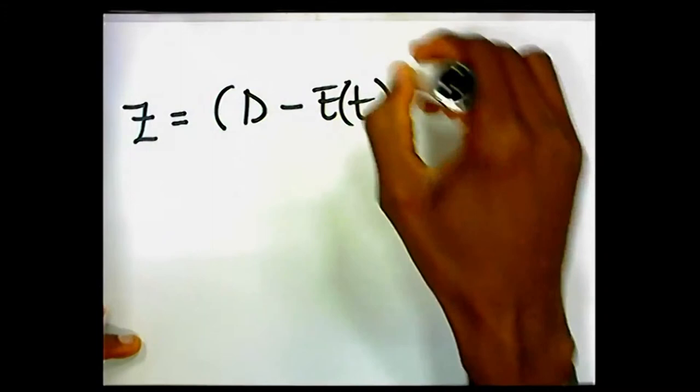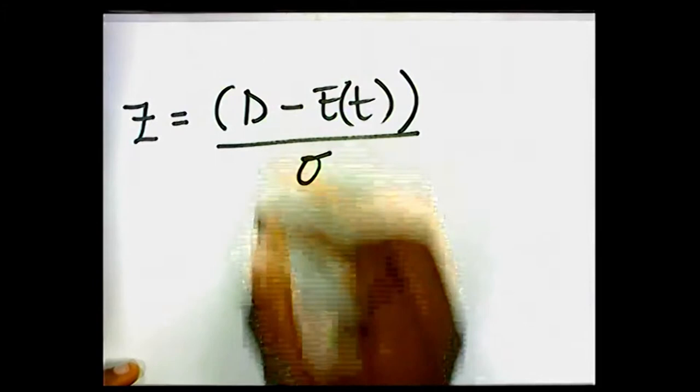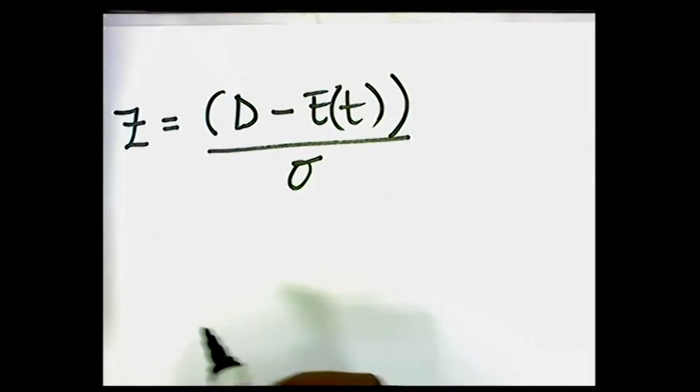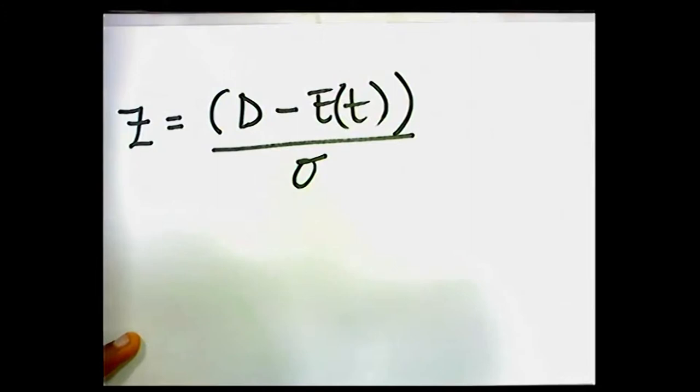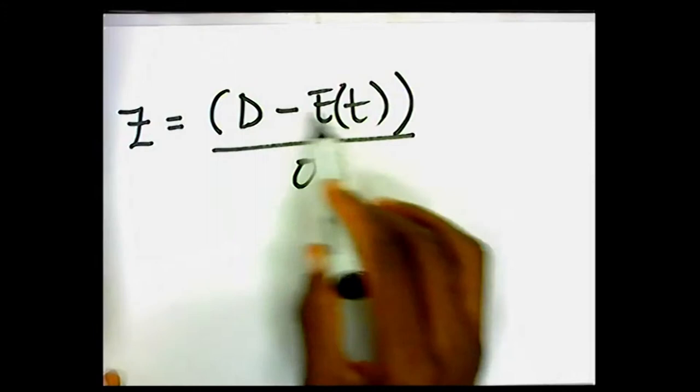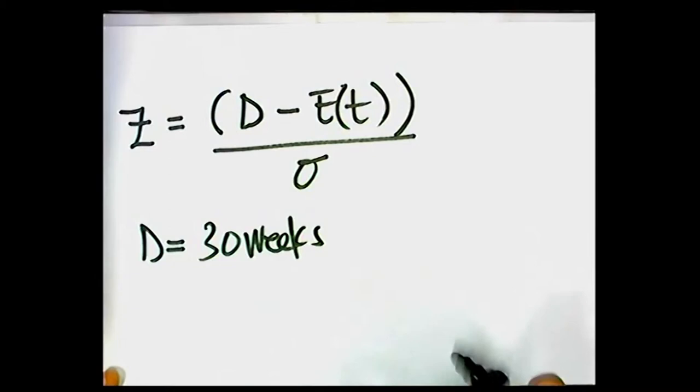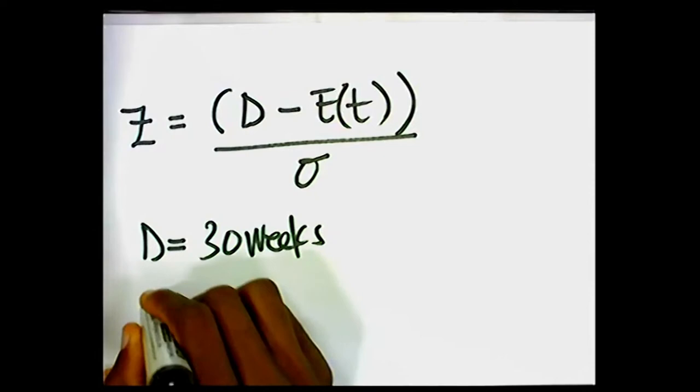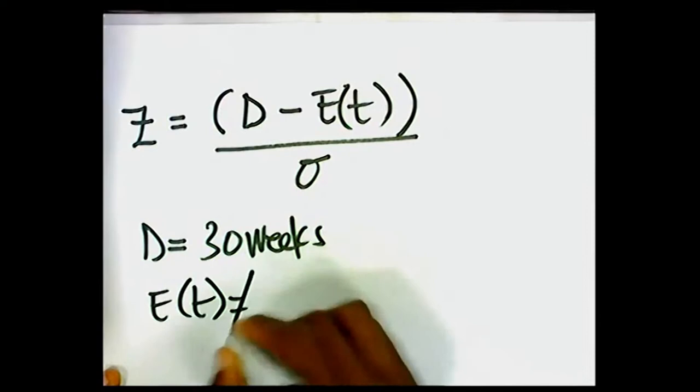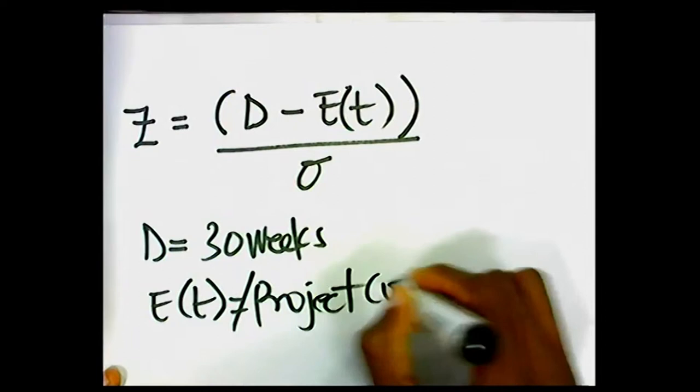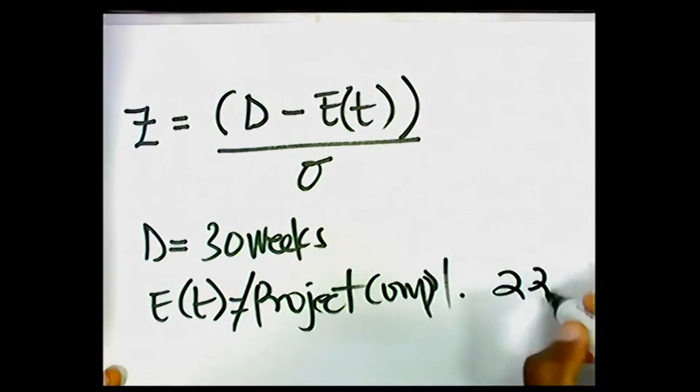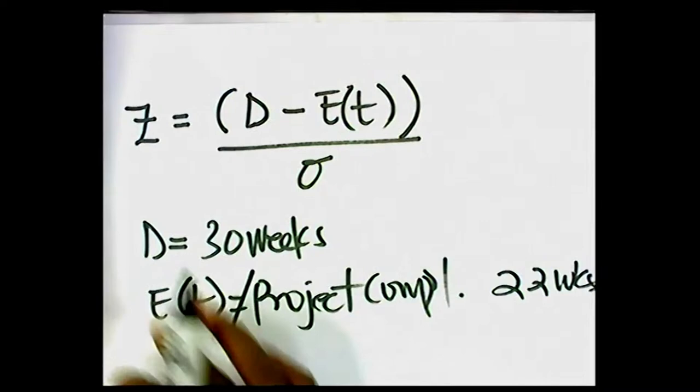So here, our standard deviation. And so like I said, we compute our standard deviation using the variance. And so for each activity, you wouldn't compute the variance for all the activities. All you need to do is to compute the variance for the critical activities. For these two values here, the d and then the expected time, this d here is the same as the 30 weeks, which is, in quantitative method, we'll say this is the sample mean. And then our expected time here is the same as the project completion time. So the project completion time, which in our case was 22 weeks.